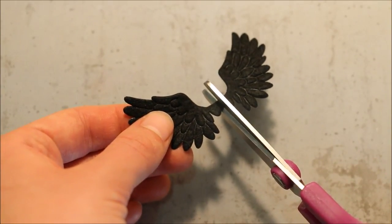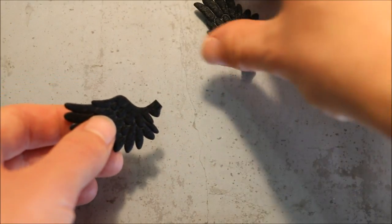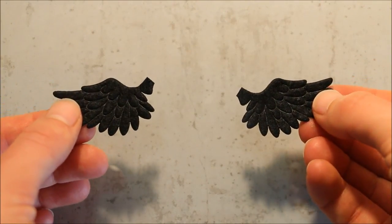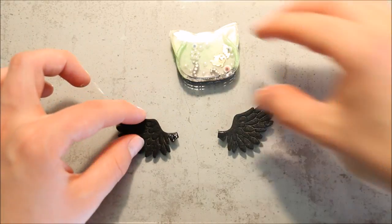For a final spooky touch, I took one of the fabric pieces, being these black wings, and I cut them in half using my scissors before super gluing them onto my shaker charm.